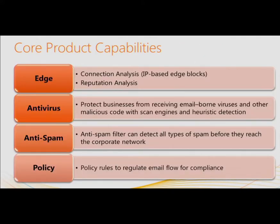In addition to those three, we have edge blocking. This is based on global scanning — there's a list of IPs that get blacklisted and whitelisted. You've probably heard, 'my email's not working because my IP got blacklisted.' The edge layer manages those and would drop emails directly before they even enter our system, if the emails are coming from a blacklisted IP.